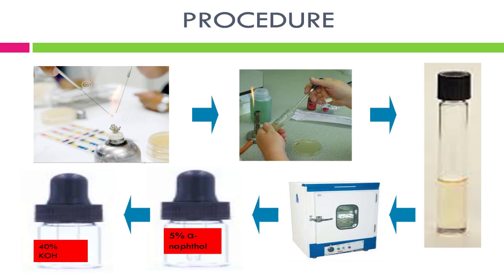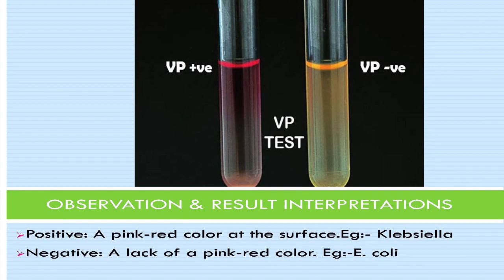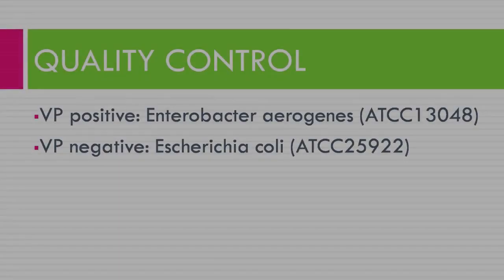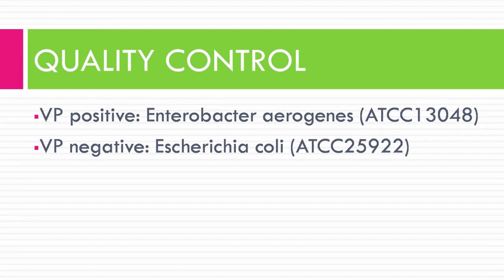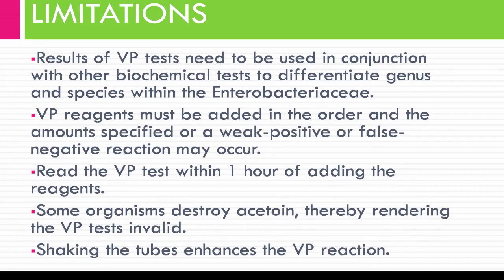Observe for a pink-red color at the surface within 30 minutes; shake the tube vigorously during the 30-minute period. Result interpretation: VP positive — a pink-red color at the surface; example is Klebsiella. VP negative — lack of pink-red color; example is E. coli. Quality control: VP positive — Enterobacter aerogenes; VP negative — Escherichia coli. Limitation: VP test results must be used in conjunction with other biochemical tests to differentiate genera and species within Enterobacteriaceae.